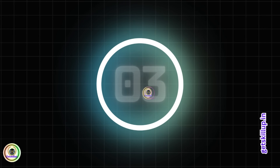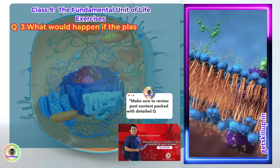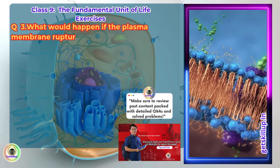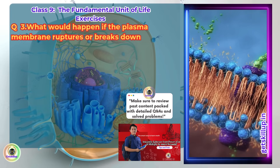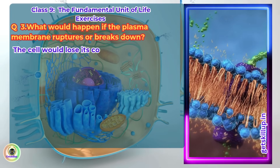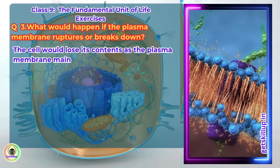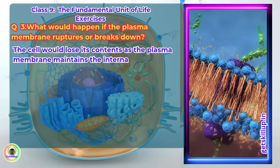Q3. What would happen if the plasma membrane ruptures or breaks down? The cell would lose its contents as the plasma membrane maintains its internal environment.